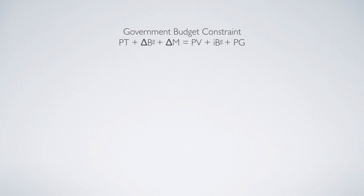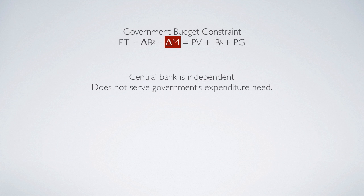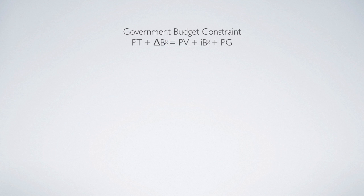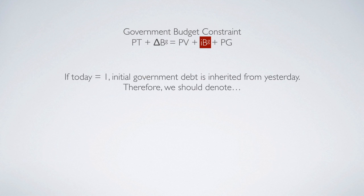Now we are going to put time subscripts on the government budget constraint. But before we do that, we look at the new money printing component. Normally, the central bank is independent — it does not serve government's expansion needs, so government cannot ask the central bank to print money for it to use. Therefore, we assume that the issuance of money for government to use is equal to zero, and we drop it from the government budget constraint. Now the interest payment, if we use subscript 1 to represent today, is a payment for debt accumulated up to yesterday, so we put subscript 0 for that component.